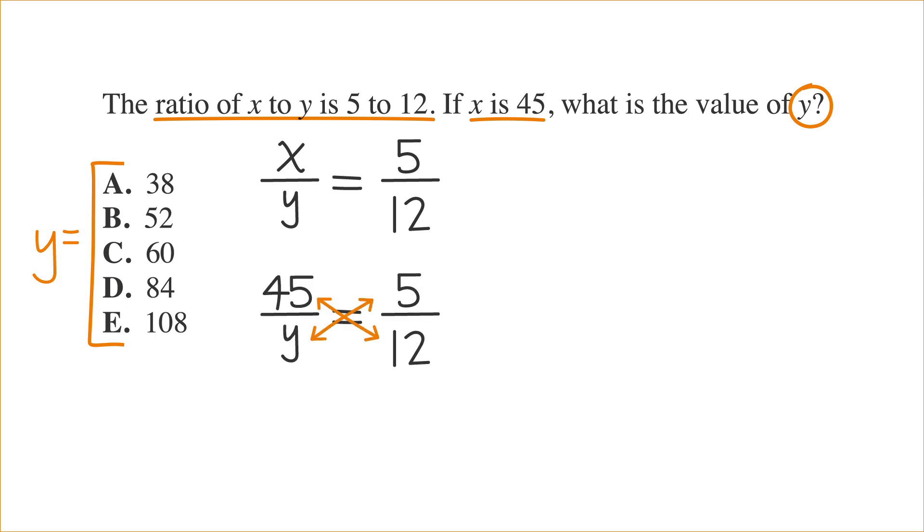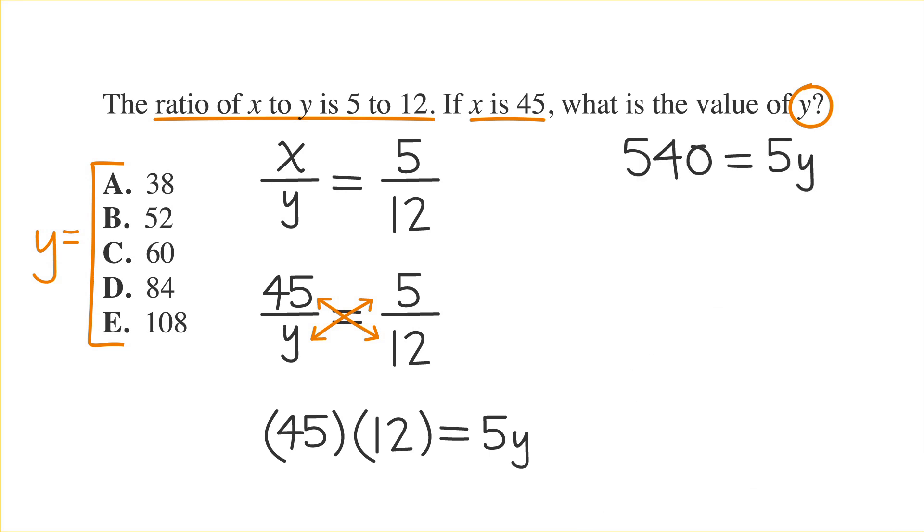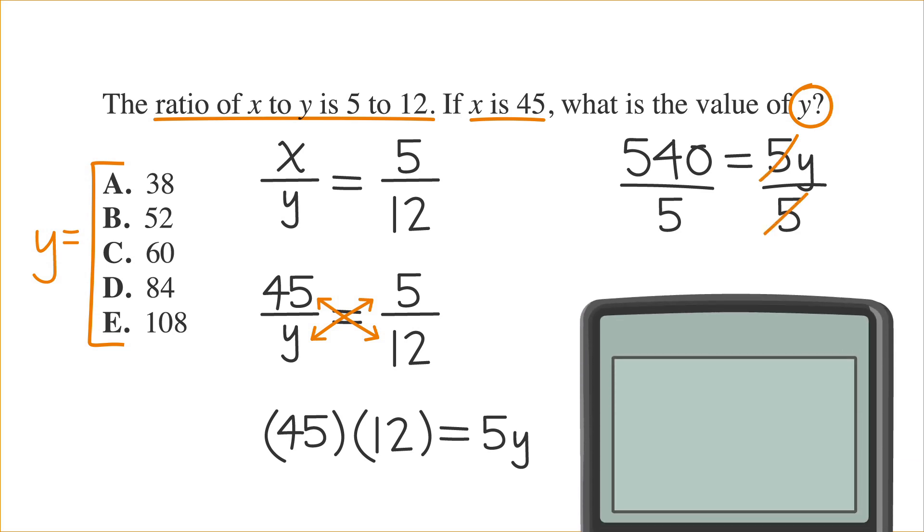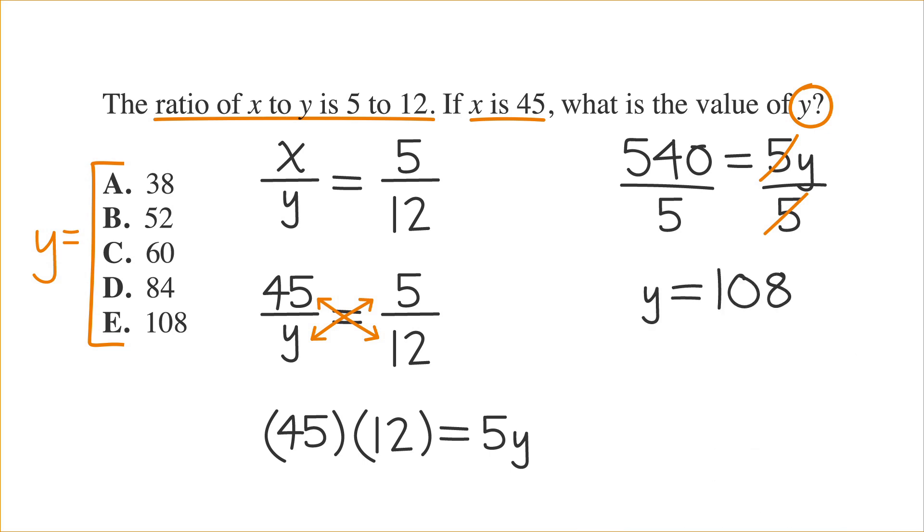First, we'll need to cross multiply to get 45 times 12 equals 5y. Then, using our calculator, 45 times 12 is 540. So, now you have 540 equals 5y. Divide each side by 5. Your 5s will cancel each other out. Using our calculator, 540 divided by 5 is 108, so y equals 108, which is choice E. That ACT problem was pretty straightforward.